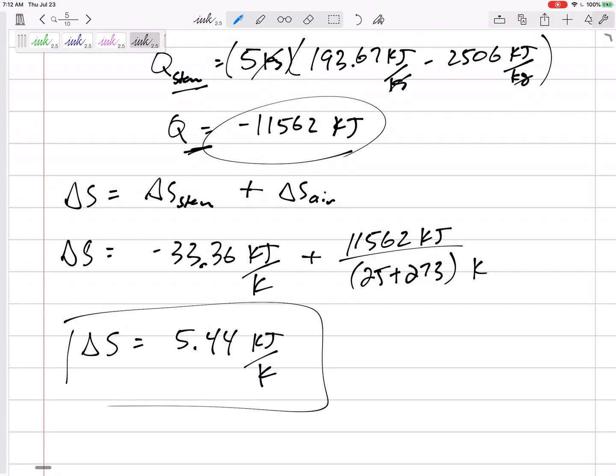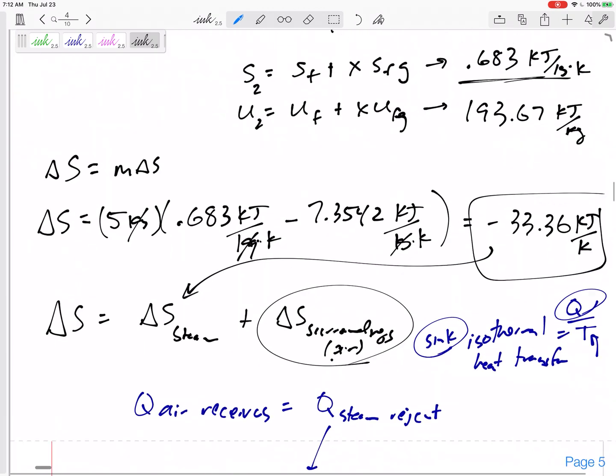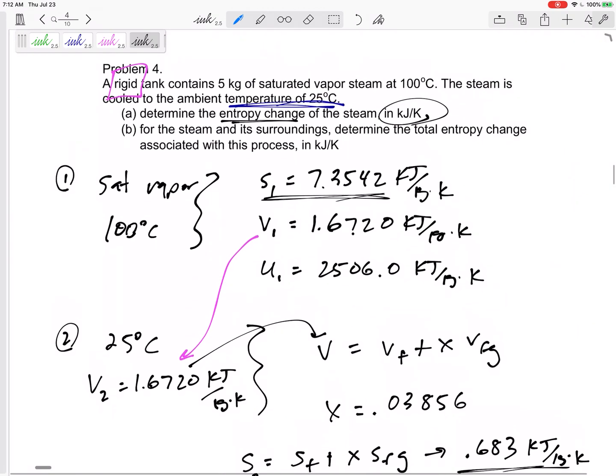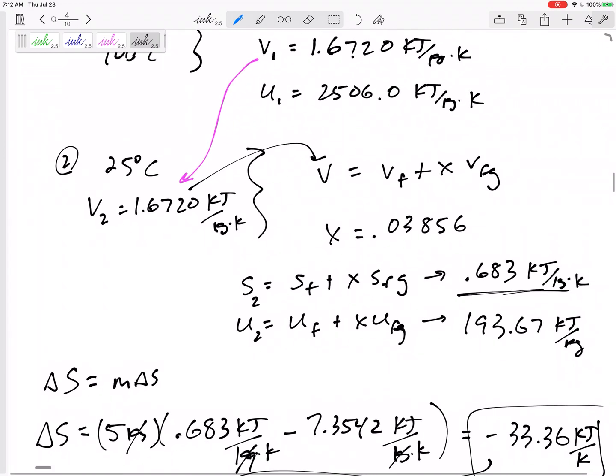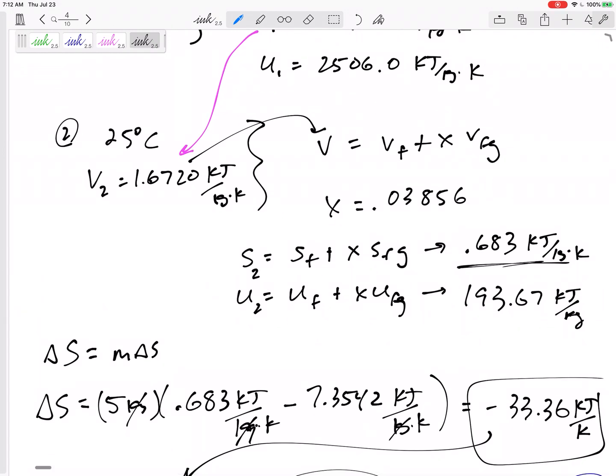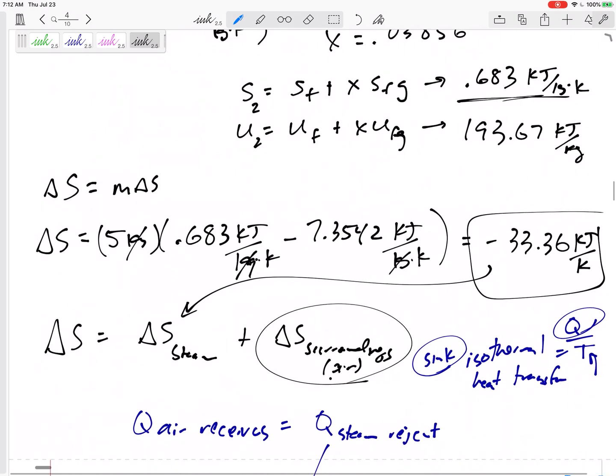That was tough, but it was an entropy change of a pure substance, so we looked at the property tables. This one was a rigid tank, so V1 was the same as V2. That lets us jump from one to two, lets us find the quality for state two. With quality, then you can find anything you want for state two. I found S and U. Delta S is m delta s.